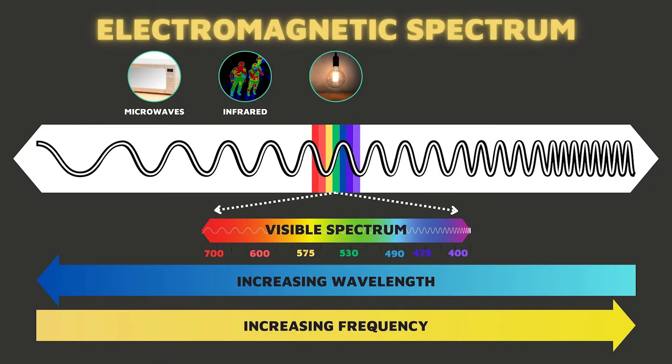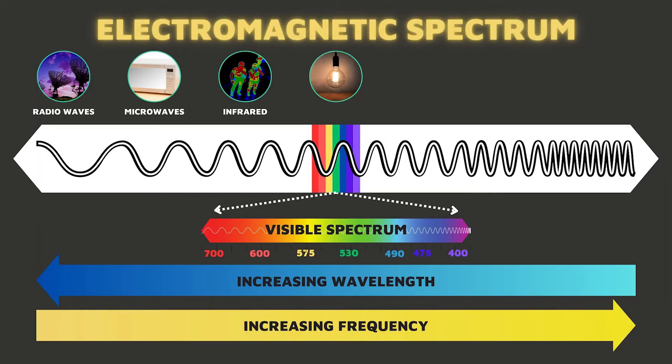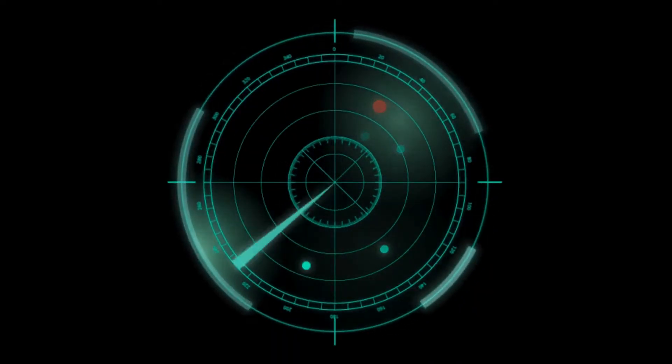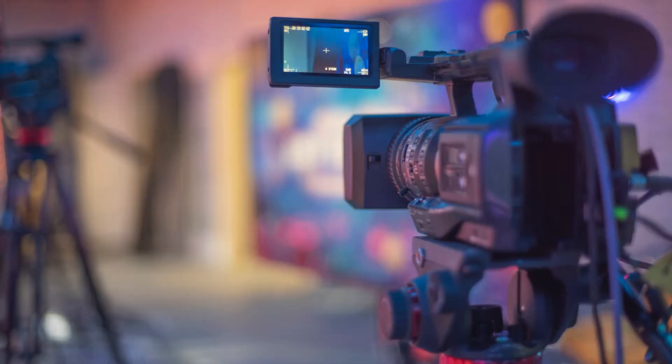Lower than infrared waves are microwaves. These are the waves that cook your food in a microwave — we really got creative with the name there. The frequency or energy of the invisible waves inside your microwave oven is just perfect for vibrating water molecules, which heats up the wet parts of your food. Radio waves are the lowest energy waves on the electromagnetic spectrum. Radio waves transmit the music you hear on the radio. They are also used for radar, satellite communications, and television broadcasting.